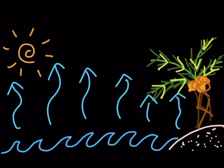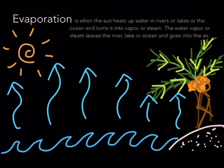All right, so did anybody discuss evaporation? Evaporation is when the sun heats up the water in rivers or lakes or the ocean and turns it into vapor or steam. The water vapor or steam leaves the river, lake, or ocean and goes into the air.